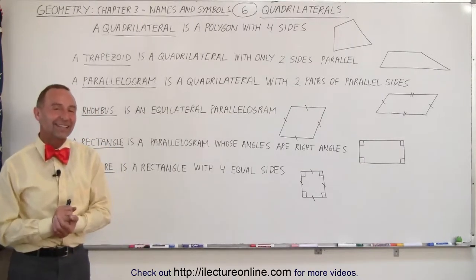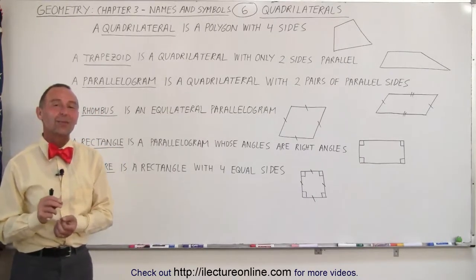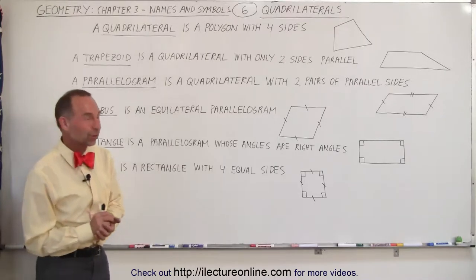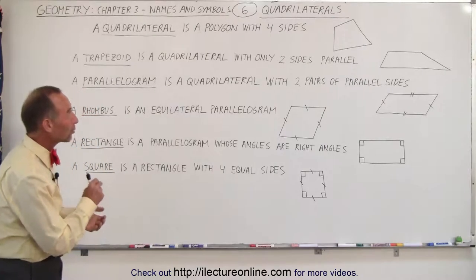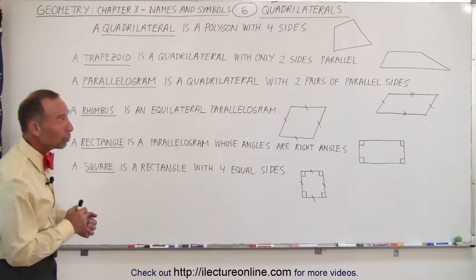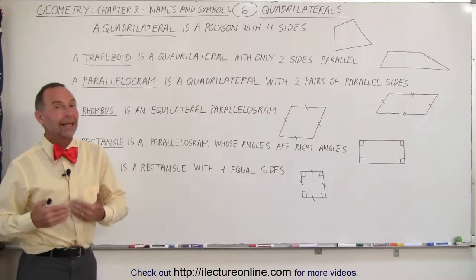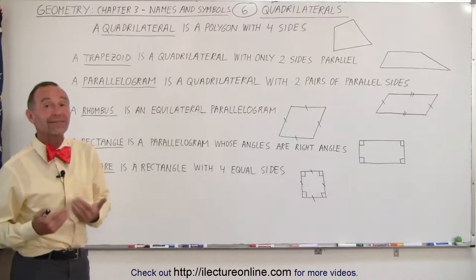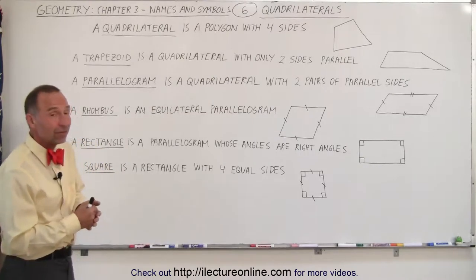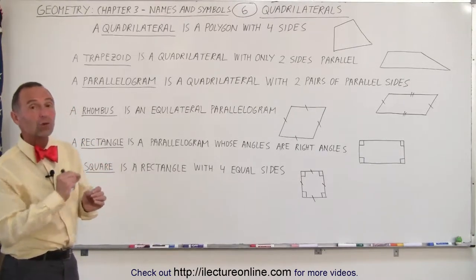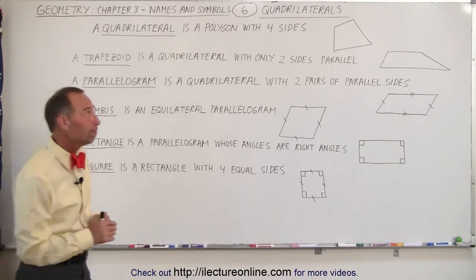Welcome to ElectronLine, now let's talk about quadrilaterals. What is a quadrilateral? Well, quad means four and lateral means sides. That means a figure that has four sides.